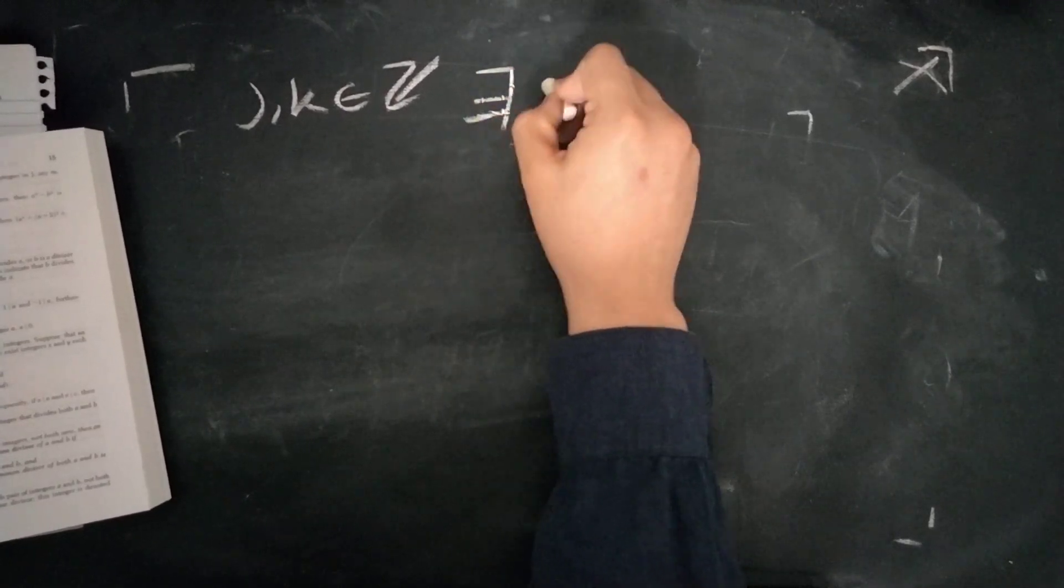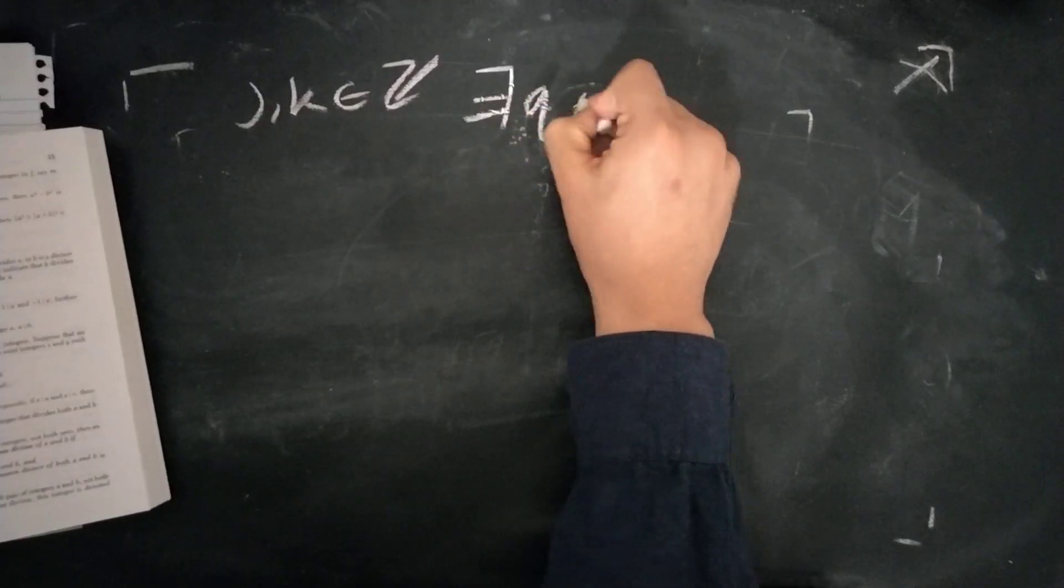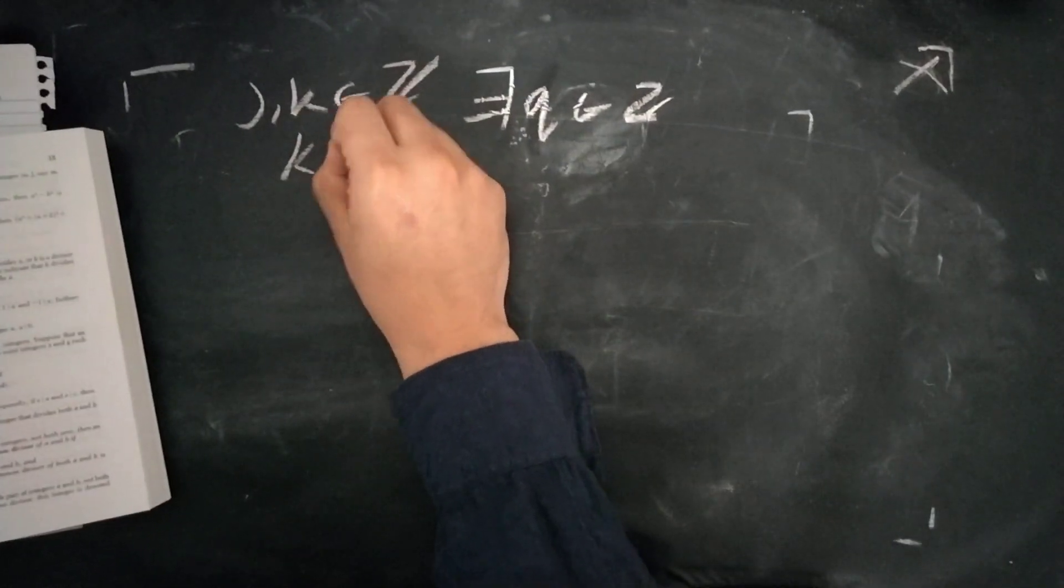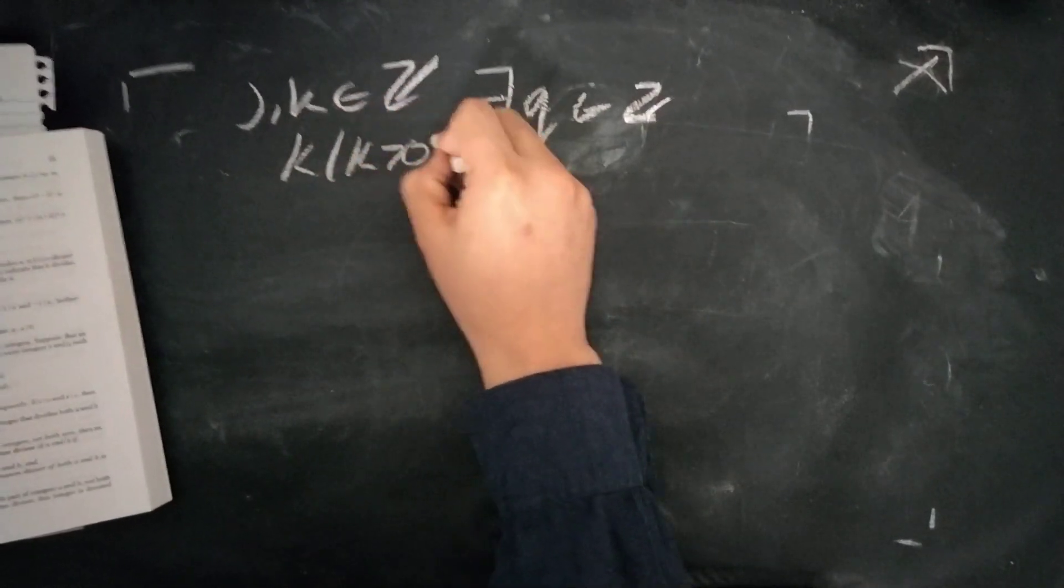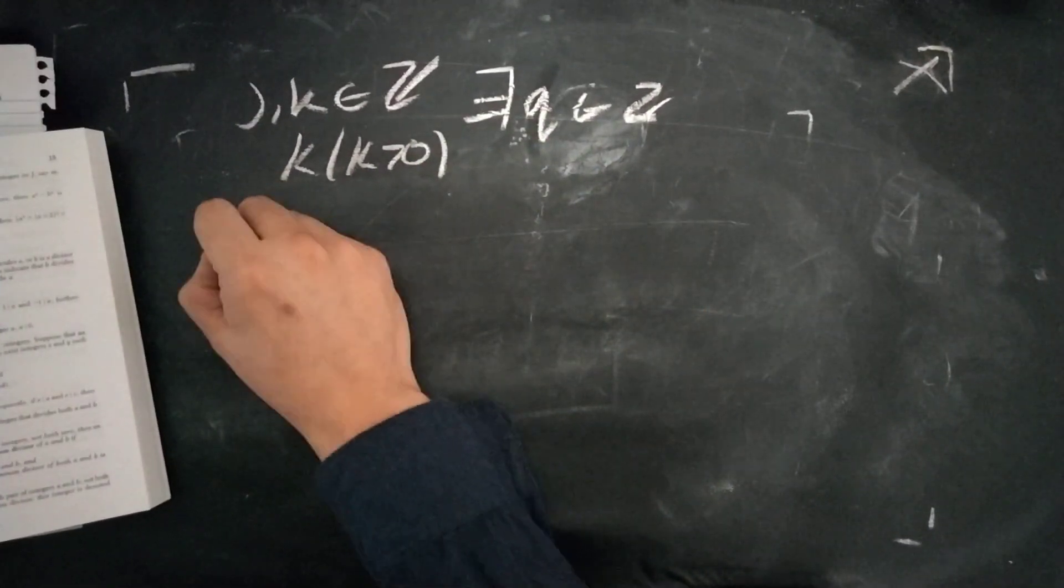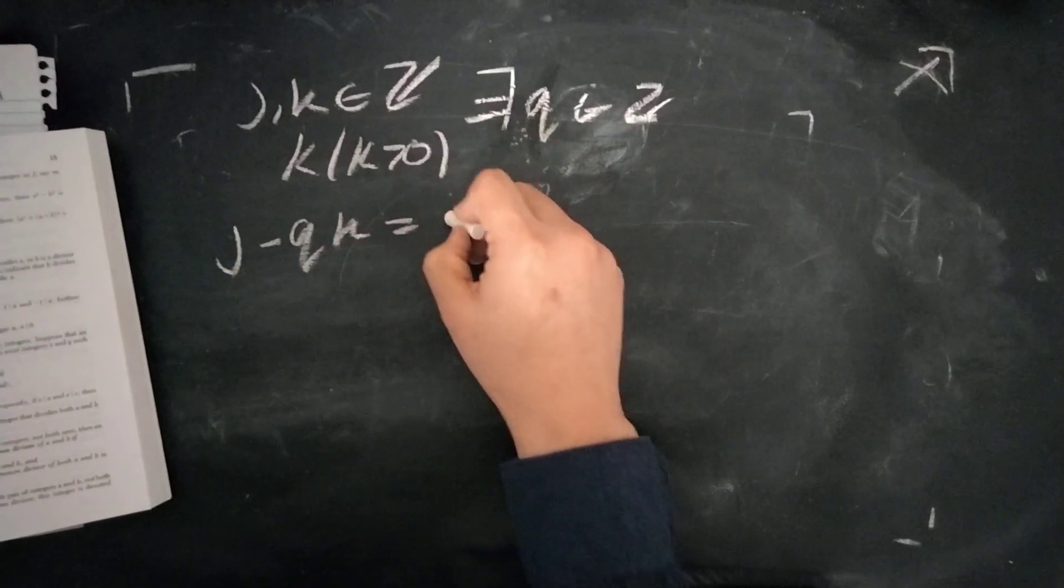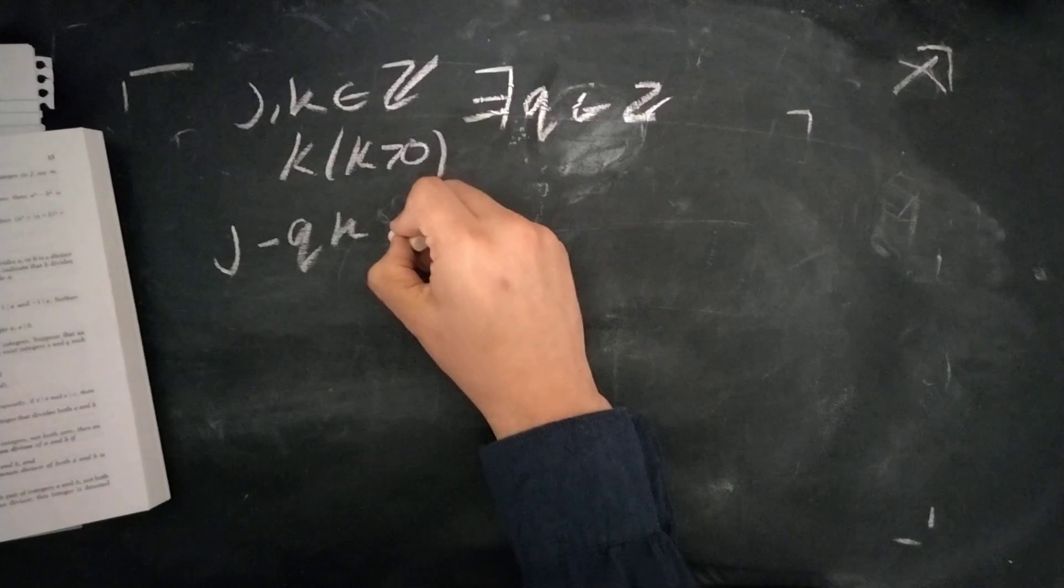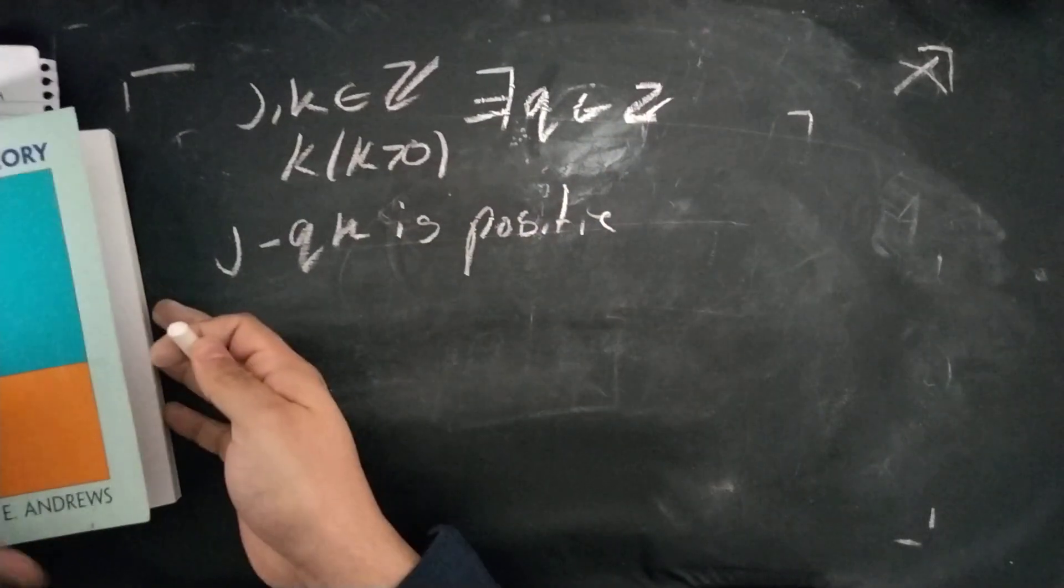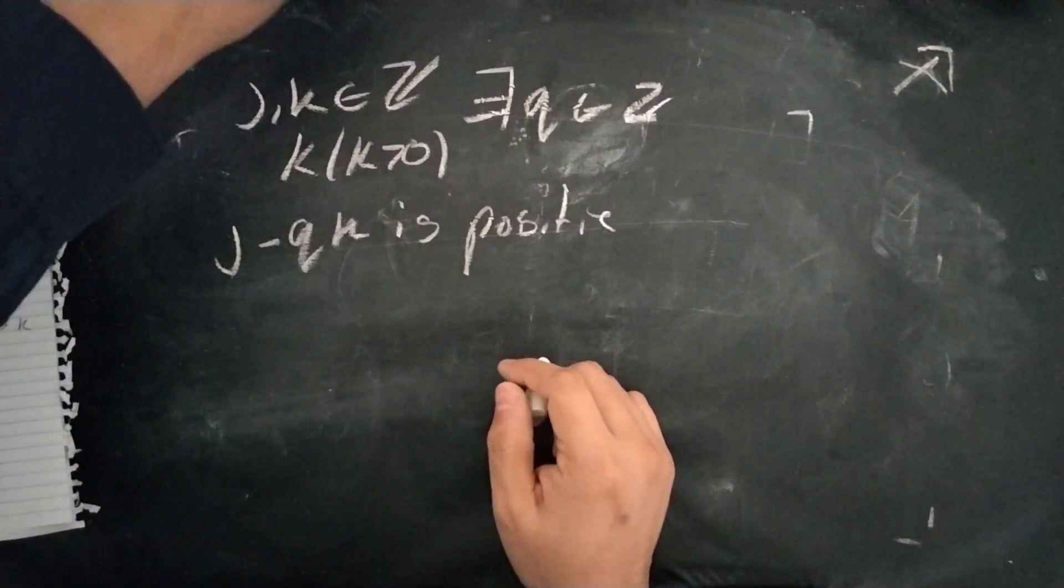that there exists some Q. That's also an integer. Also K, in this case, is K greater than 0. Some integer Q, for which we end up with J minus QK, is positive. This is what the question asks, and we're going to prove that right now.